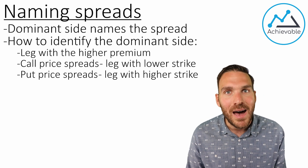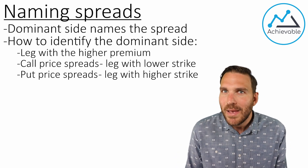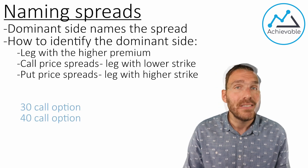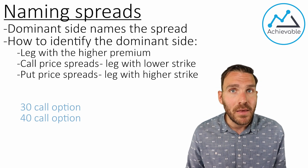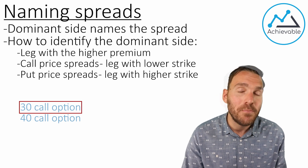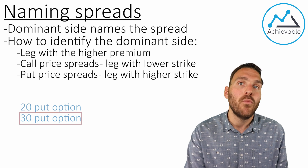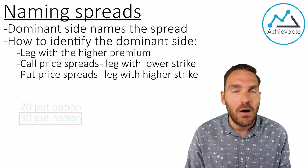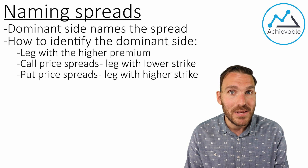When we say dominant side, we're often referring to the more valuable option. The lower the strike price on a call, the more valuable that call. Comparing a 30 call to a 40 call — the 30 call gives someone the right to buy at a lower price, making it more valuable. And with puts: comparing a 20 put and a 30 put, the 30 put is more valuable because it gives someone the right to sell at 30, whereas the 20 put only gives the right to sell for 20. So with call spreads, the lower strike price is the dominant side; with put spreads, the higher strike price is the dominant side.